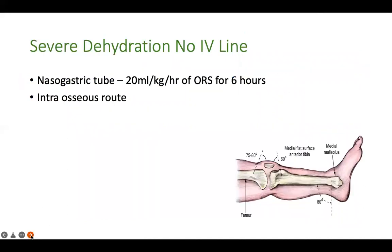If the child has severe dehydration with vomiting and you cannot get peripheral IV access, insert a nasogastric tube and give ORS at 20 ml per kg per hour for six hours. If the child is vomiting and not tolerating nasogastric ORS, insert an intraosseous needle in the upper end of the tibia and administer IV fluid via the intraosseous route.